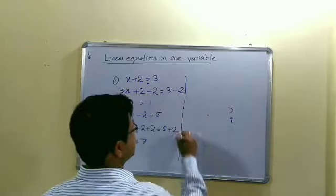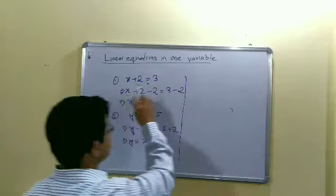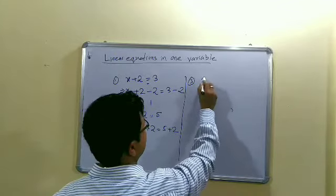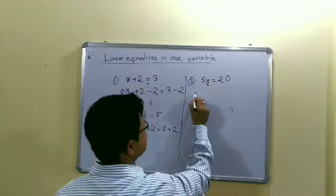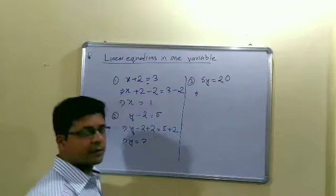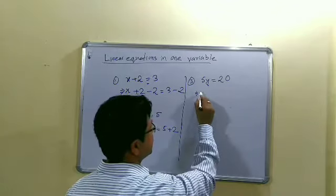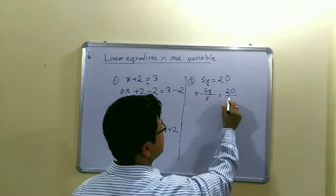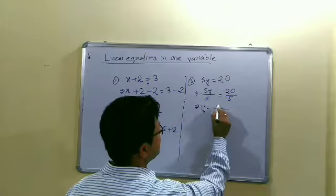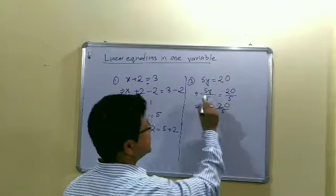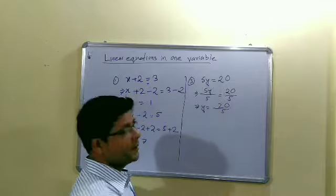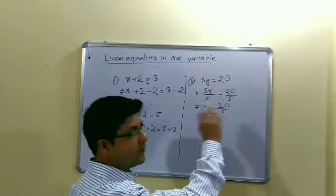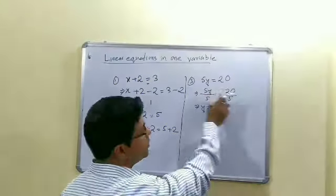In the case of addition and subtraction, we have seen. One more case: suppose 5y = 20. We have to find y. What we will do? We shall divide both sides by 5. 5 cancels, 20 divided by 5 is 4. So with y, 5 is multiplied. We say that on the other side when 5 will be shifted, it will be divided.